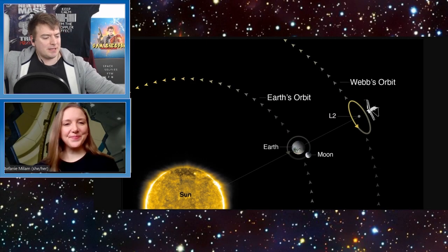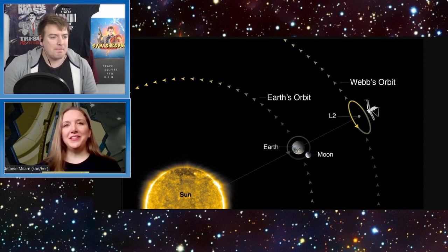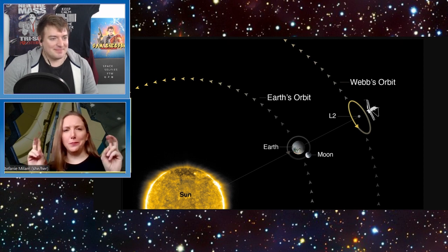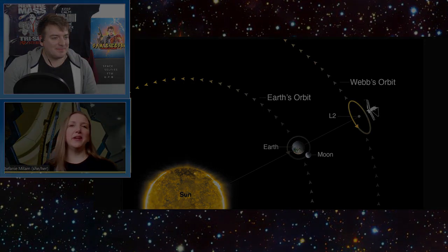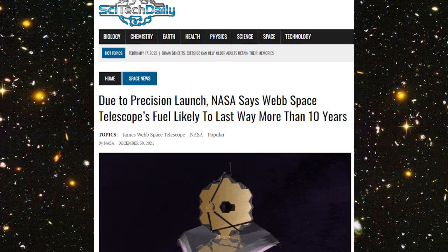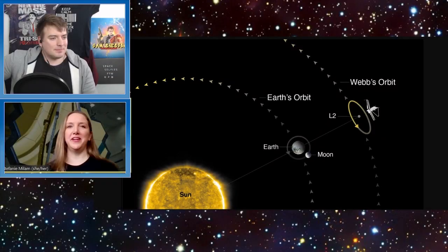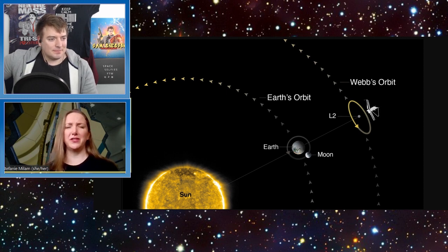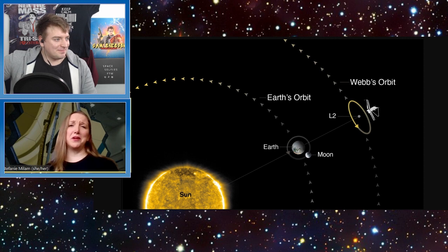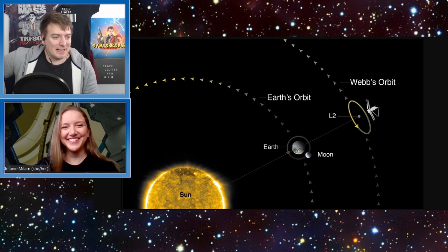Is anything outside expectations at the moment or everything green across the board? Everything has been flawless or what we like to say nominal. And it's actually gone so well that we now know that we have a fuel reserve that'll give us a longer mission lifetime than we originally anticipated. So we're well in the 10 plus year regime now for science, which is fantastic.